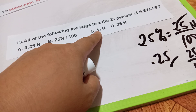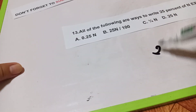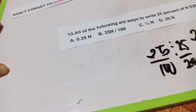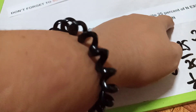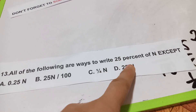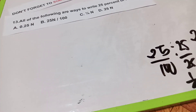25 over 100 is divisible by 25, giving us 1 over 4. So we can also write 1/4 times n. The answer is letter D — that expression is the exception. The other answers can be related to 25%, 0.25, and 1/4 times n respectively.